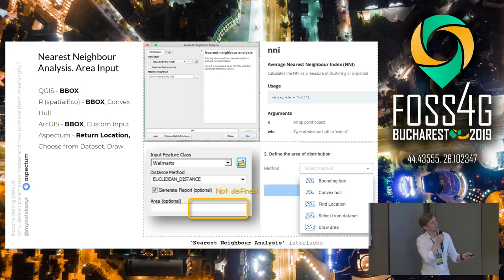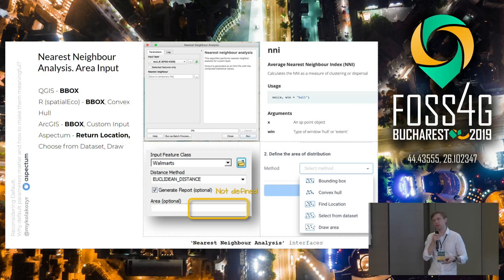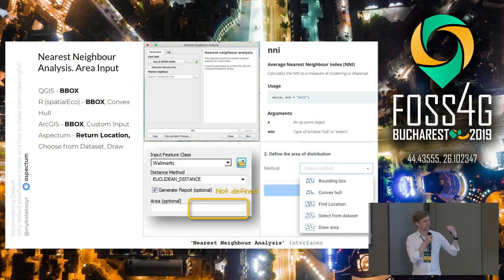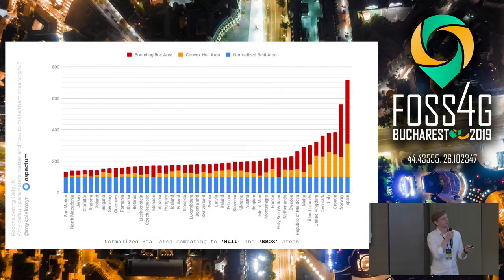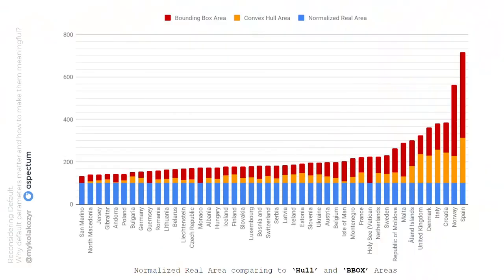In our product, we added a couple of other options. Here is a normalized visualization for the real area of distribution based on countries. The blue one is the normalized real area of countries. The orange one is the area of the convex hull around features that are randomly distributed within the country. You can also see the bounding box for each country. The difference is extremely significant — for some countries, the area of the bounding box is like five times bigger than the real area of the territory.